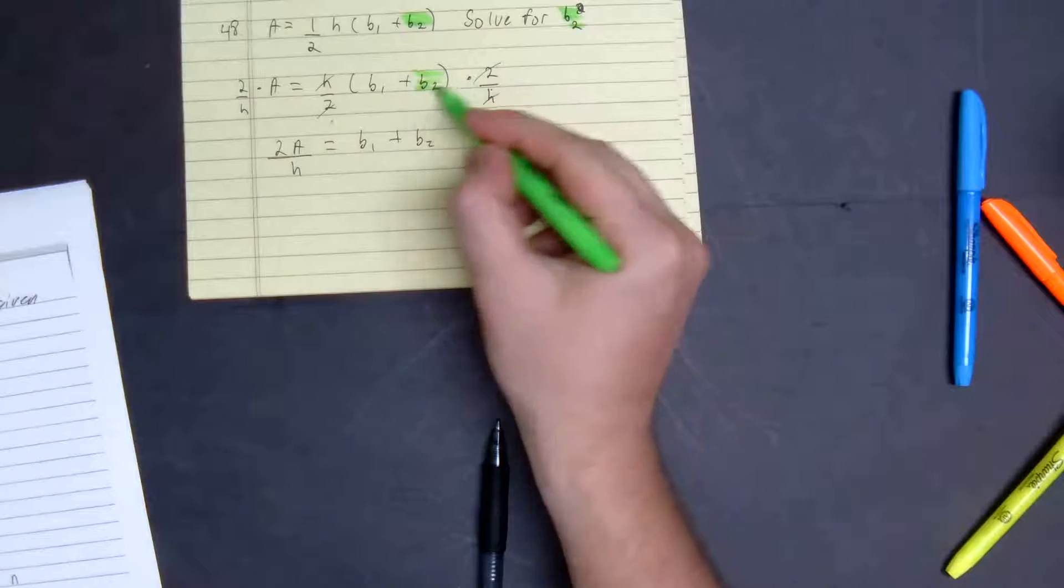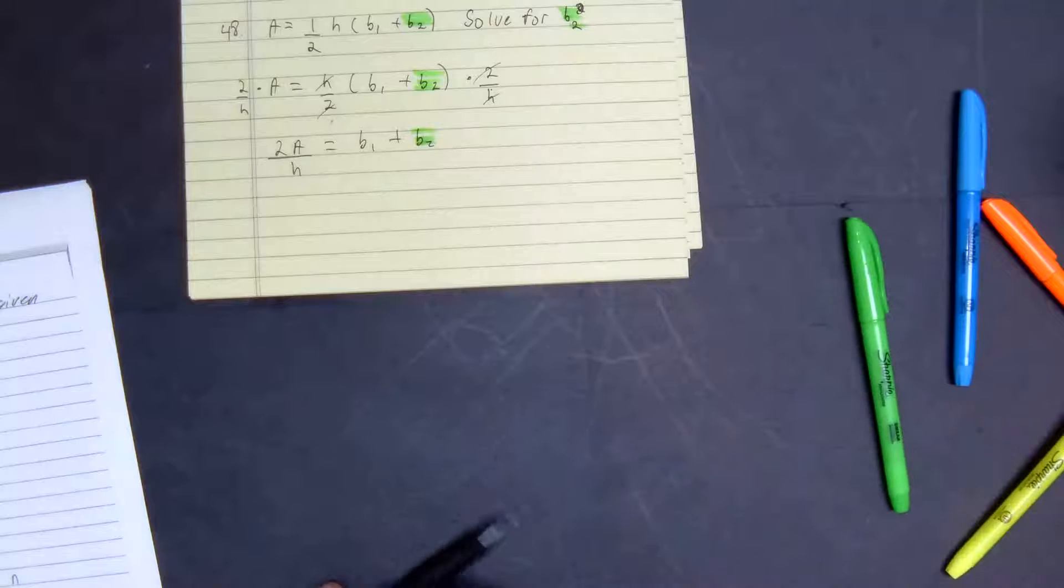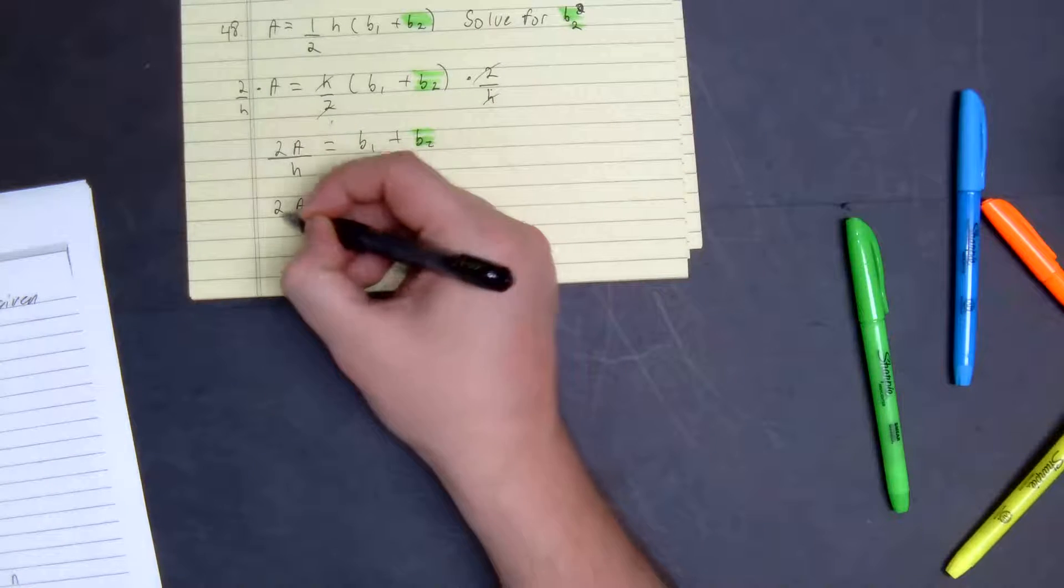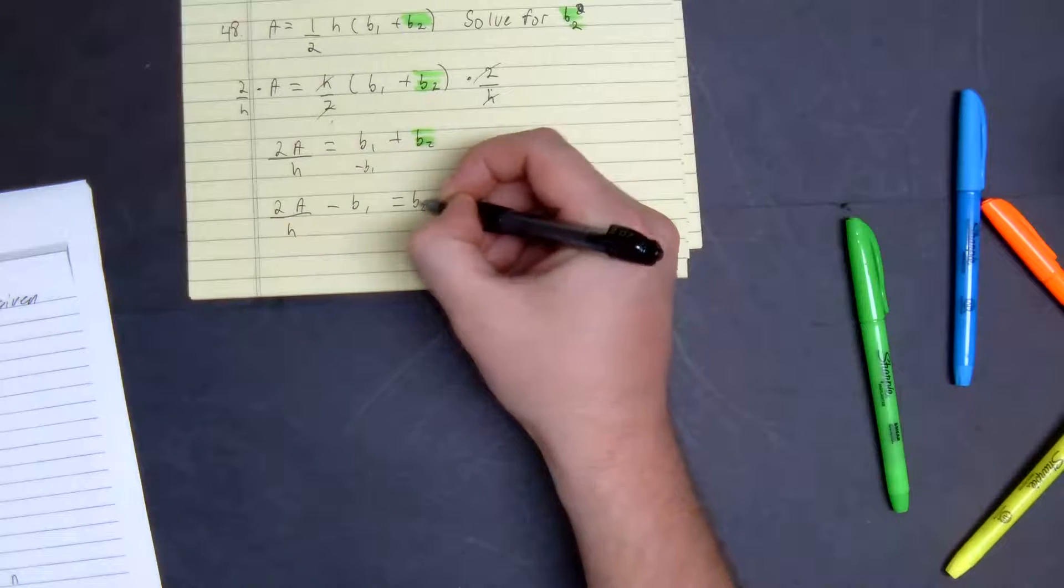Remember, our goal is to isolate base two. So we subtract both sides by base one. Two times the area divided by the height, subtract by base one, equals base two.